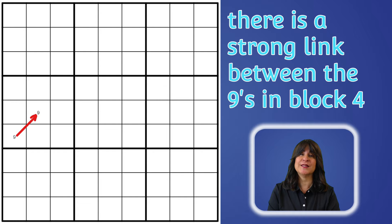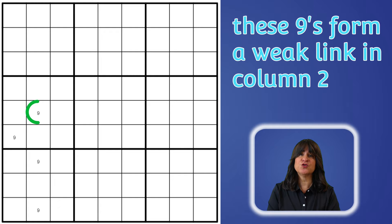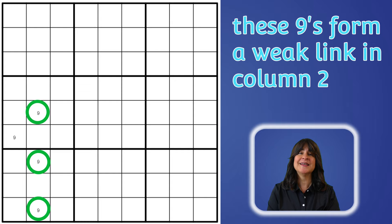Now let's add the nine candidates that are in column two. There are three possible nines in column two, so they are linked as well, but it's a weak link. Only if one nine is true then the other two nines must be false. But if that nine is false, then we don't know which of the other two nines are true — either can be true. So we don't have a strong relationship when there's more than two possible candidates. It's considered a weak relationship, so it's called a weak link.